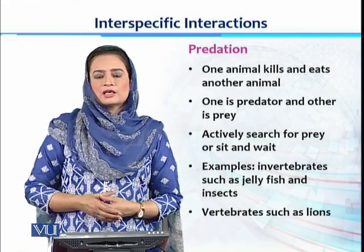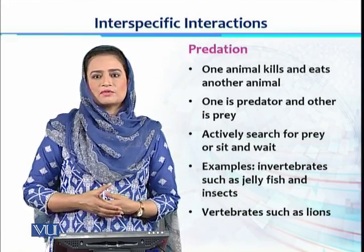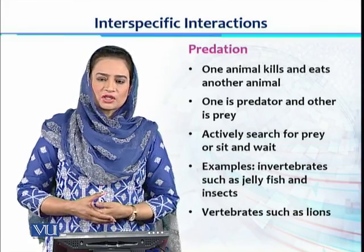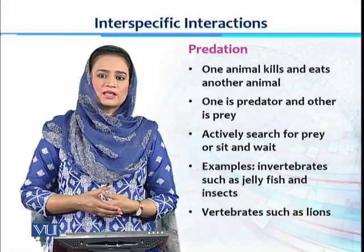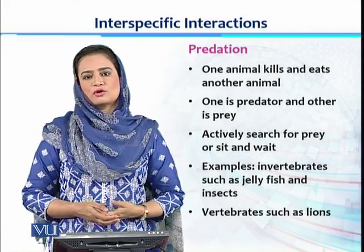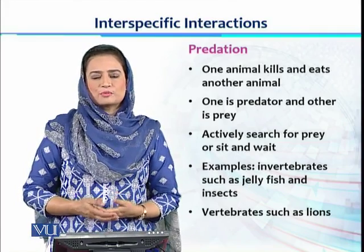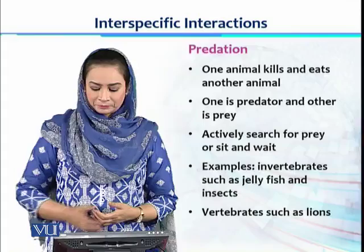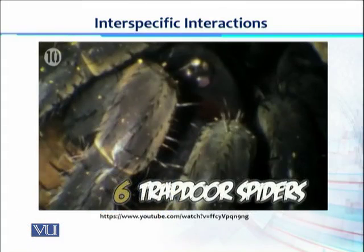Many invertebrates, for example different types of insects and jellyfish, and vertebrates such as lions and leopards, are examples of this predator-prey relationship in the environment. To understand the predator-prey relationship in both invertebrates and vertebrates, we will watch this video.